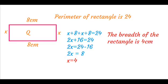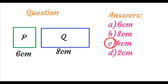2x = 24 - 16, so 2x = 8, therefore x = 4. The breadth of the rectangle is 4 cm. Option C, 4 cm, is the correct answer.